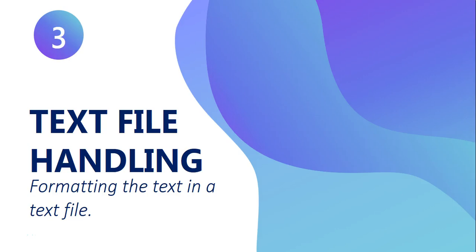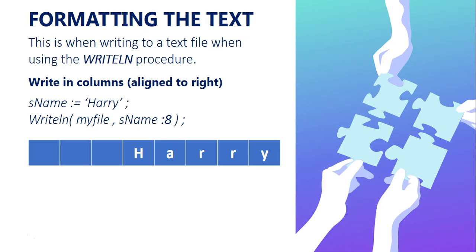In part three of our text file handling video series, we're going to look at when we write to a text file — if you're not sure, go check out video two — how do we format the text in that file if we want to lay it out with columns and so on. We'll look at three particular examples. The first is simple formatting: you can add a colon followed by a number after the string you're writing using the WriteLn procedure. What it does is create eight spaces and align that string to the right within those spaces.